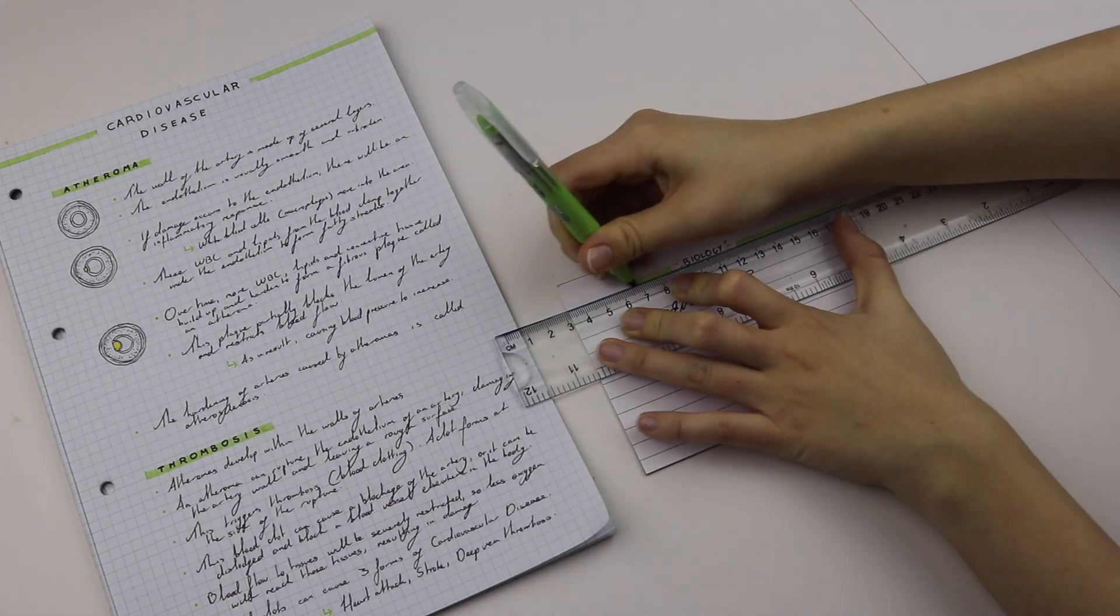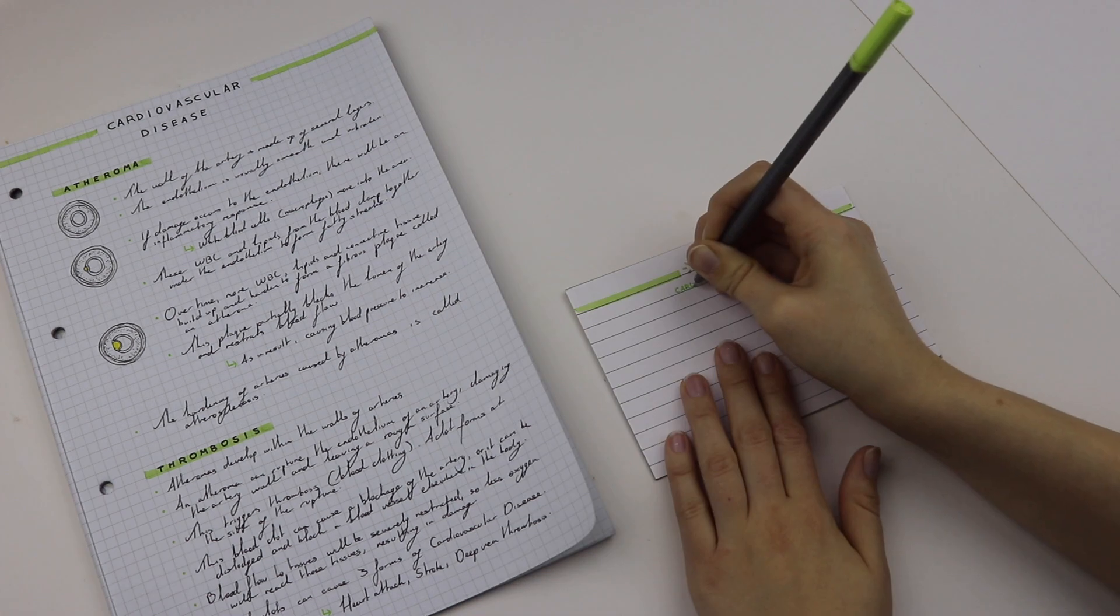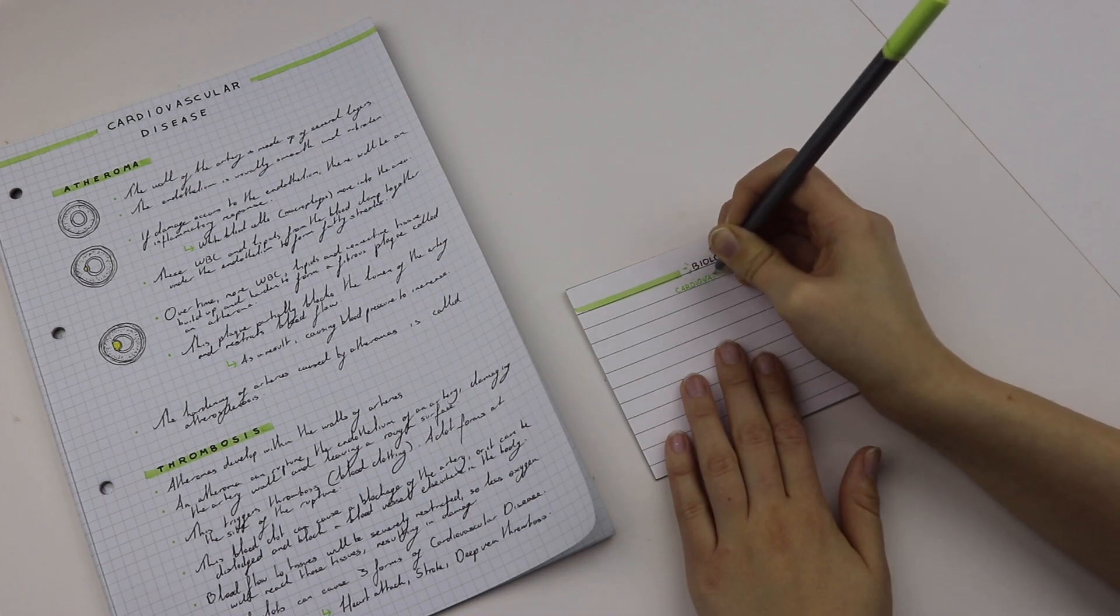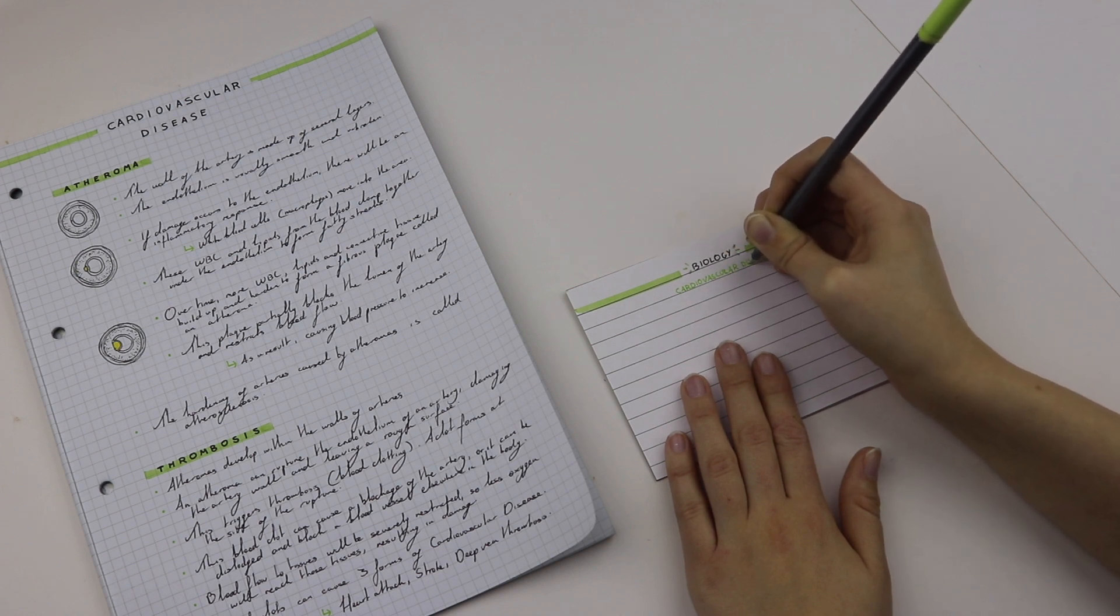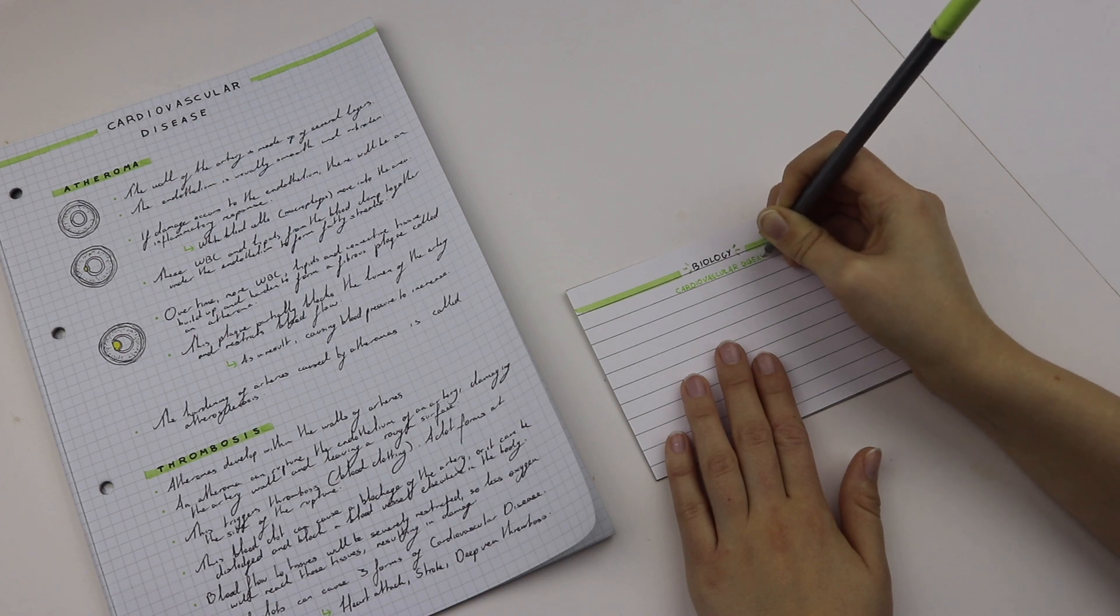What I do: I use one highlighter color and then I draw two lines going across the top of the page. Then I have a fine liner in a corresponding color to the highlighter, and underneath the subject I will then write the topic that the flashcard is on, so it's easily visible.